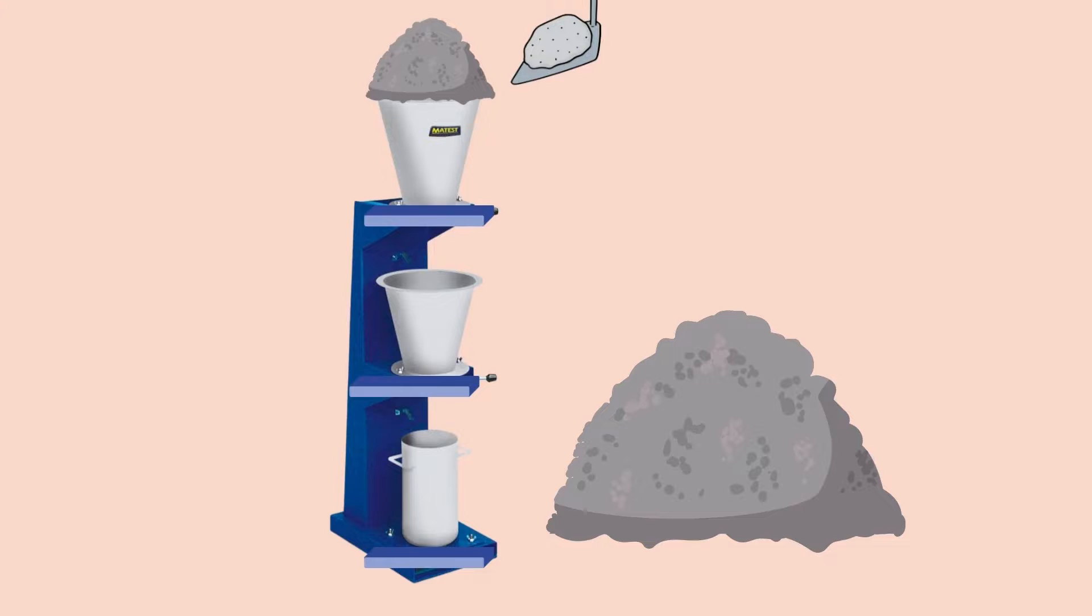Now scoop the concrete sample to be tested gently in the topmost hopper and fill it up to its brim with the help of a hand scoop. Now level the top surface properly. Cover the brim with the lid.